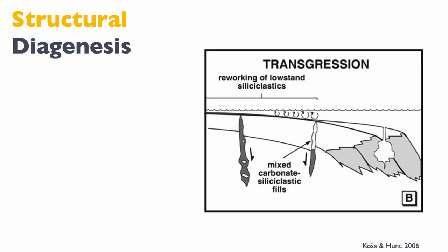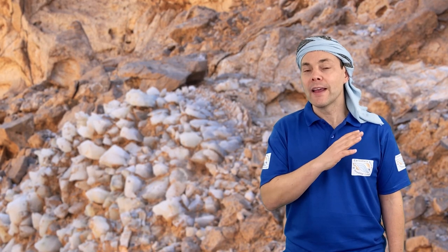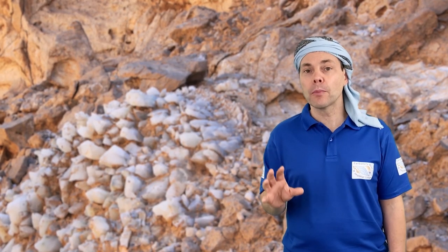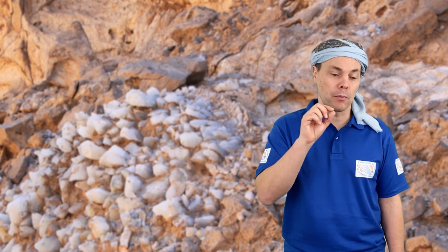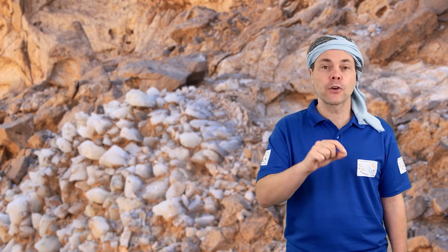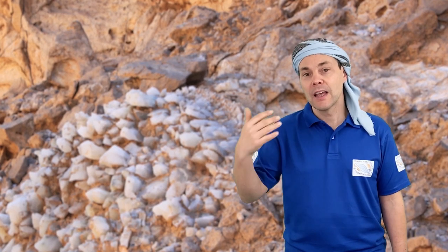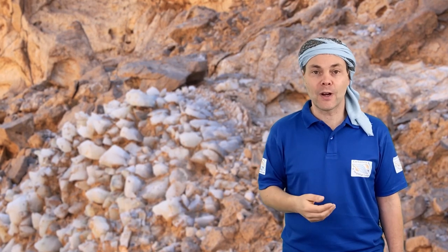During transgression, you rework the low stand deposit. Typically, if you had not completely filled some of those fractures — the ones that were closer to the reef — that's where you start having mixed carbonate-clastic fillings. We saw evidence of that at the outcrop in discrete beds where we had both deposits: marine foraminifers mixed with eolian sand that represented the low stand deposit reworked during the transgression.